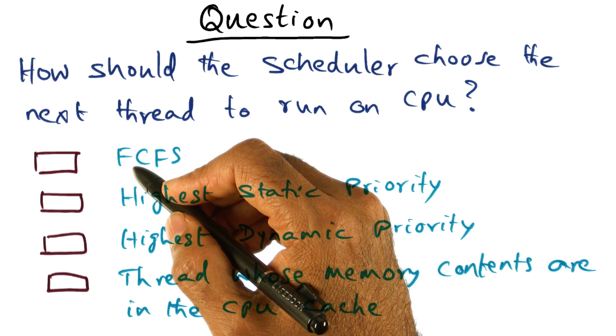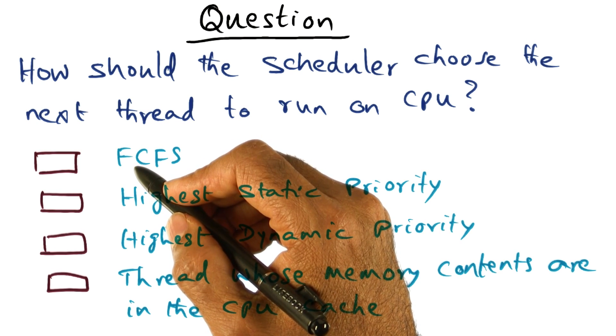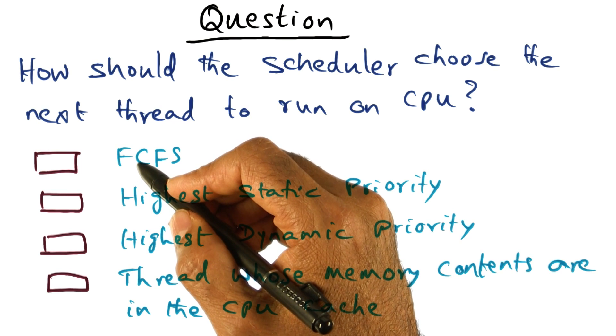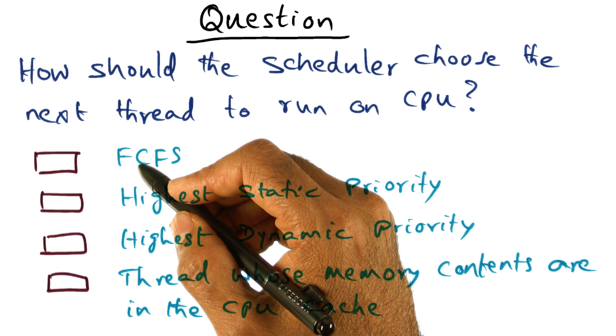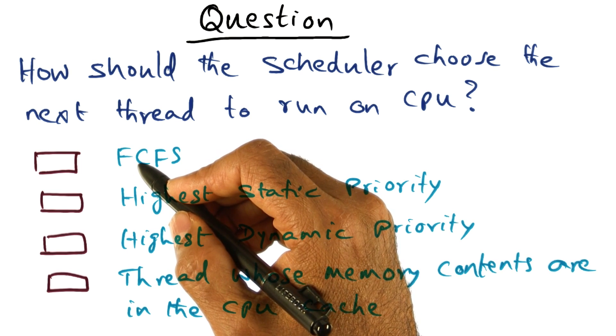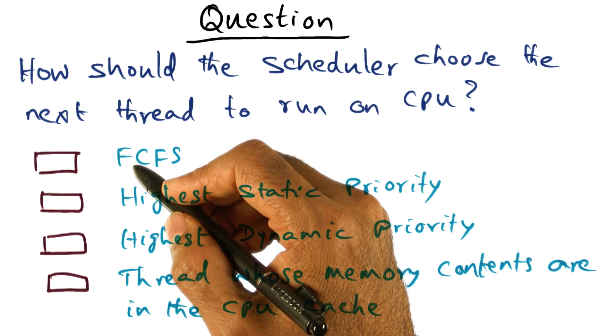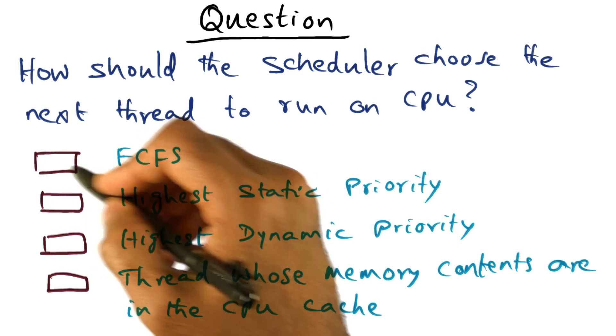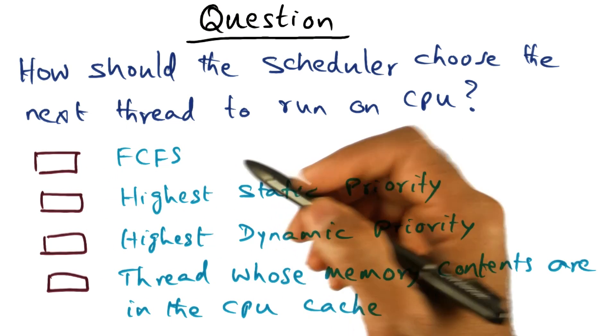That is, if I have a bunch of threads, the scheduler says, which was the earliest one that was ready to run on the processor? That's going to be the one that I'm going to schedule. That is first come, first served.